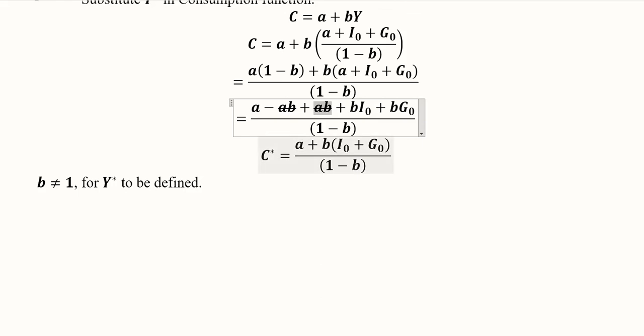So here is the equilibrium level of C* - the equilibrium level of consumption, equal to this expression. Again, the parametric stipulation that b should not be equal to 1 holds.